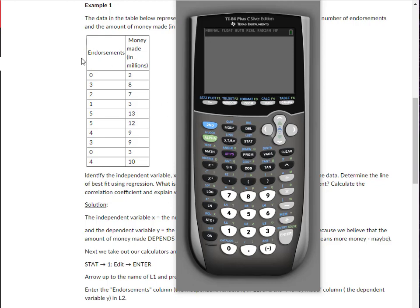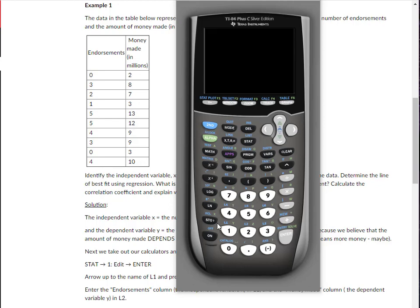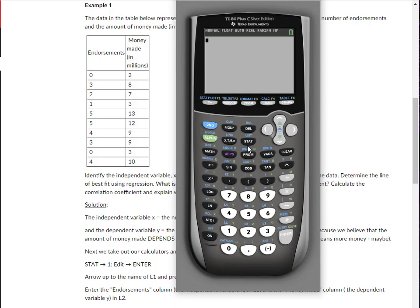First off, we need to put our data in. We have an example here of a sample of 10 professional athletes and their number of endorsements and the money they've made in millions of dollars. So the first thing is we need to put the data in.